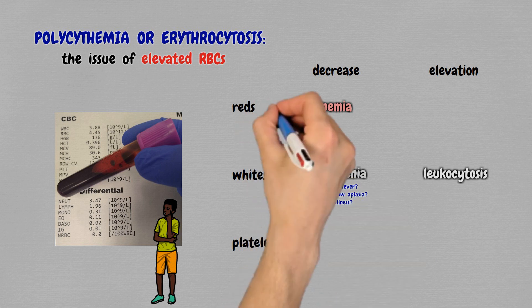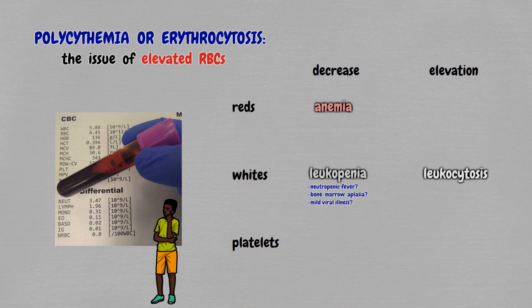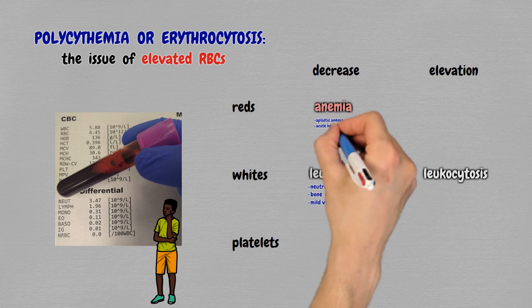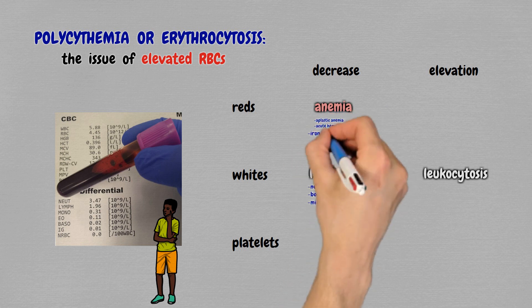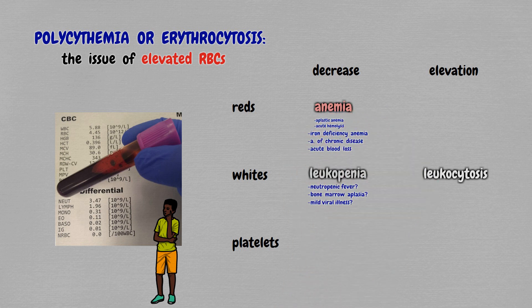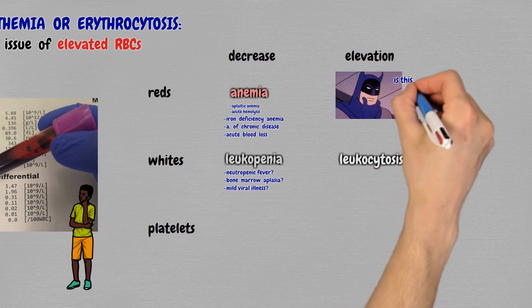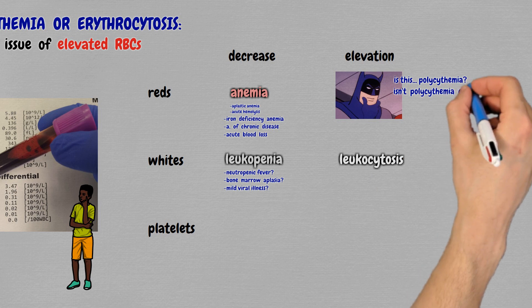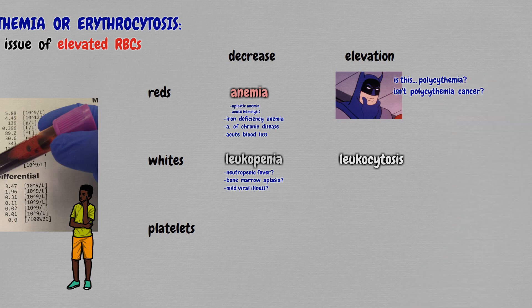The same applies to the red cell line. Most people will have some confidence on how to work up a low hemoglobin, because while there certainly are some worrisome conditions to consider, they are proportionally much less common than the common causes of anemia. For a high hemoglobin, though, this triggers a bunch of questions in our mind. The first one that pops up is: what is this called again? Is it polycythemia? And isn't polycythemia cancer? Did I just make a cancer diagnosis on this patient?